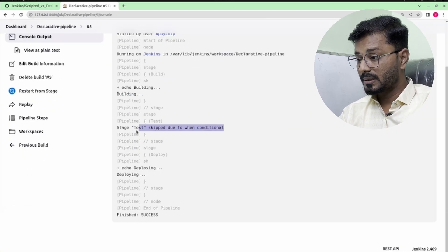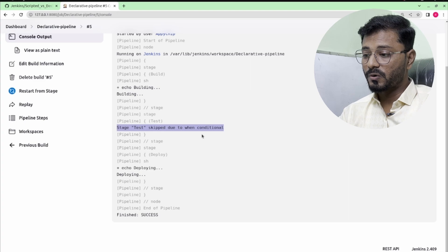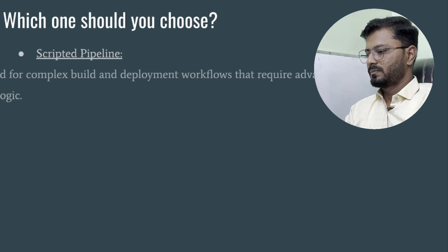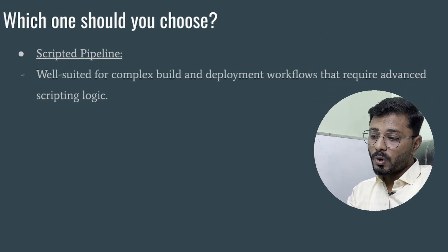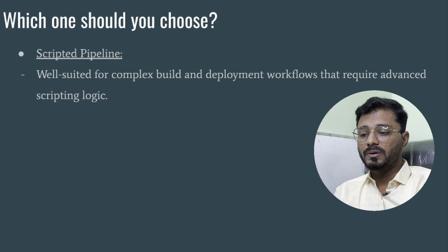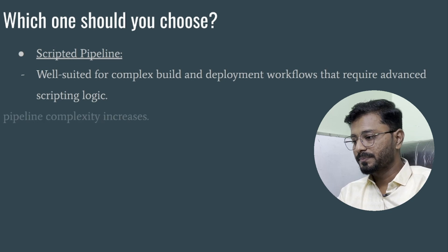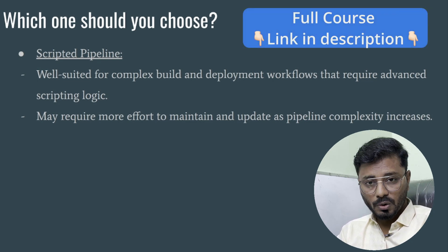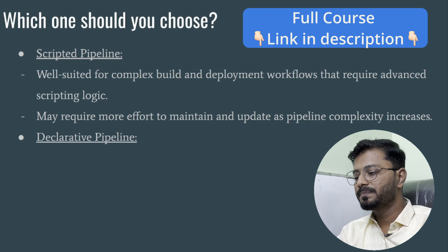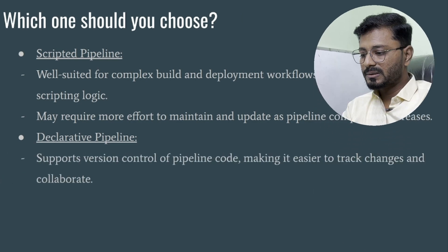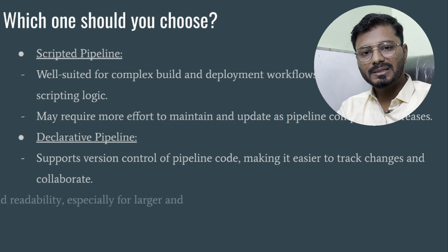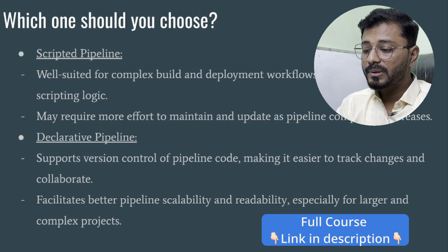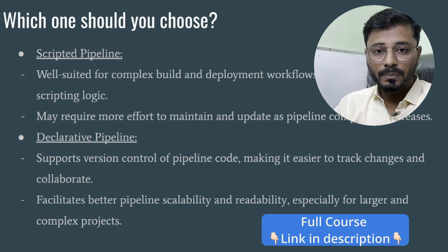So which one should you choose? Scripted pipeline is well-suited for complex build and deployment workflows requiring advanced scripting logic, but it may require more effort to maintain as complexity increases. Declarative pipeline is simpler, supports version control of pipeline code making it easier to track changes, and facilitates better pipeline scalability and readability — especially for large and complex projects.